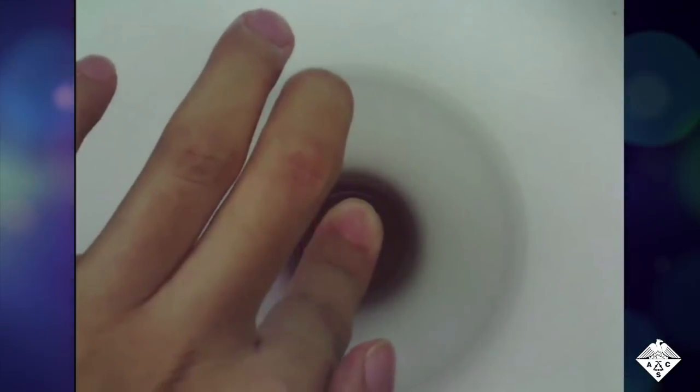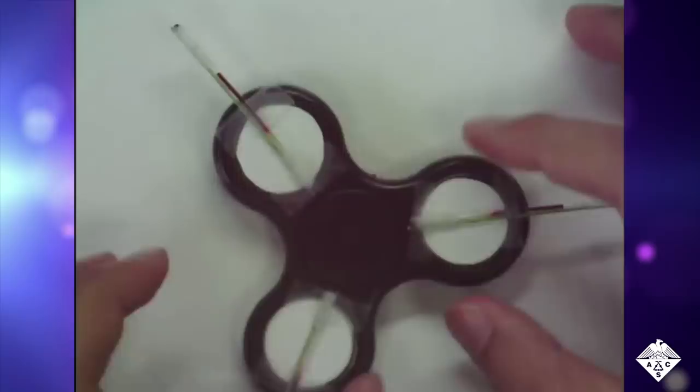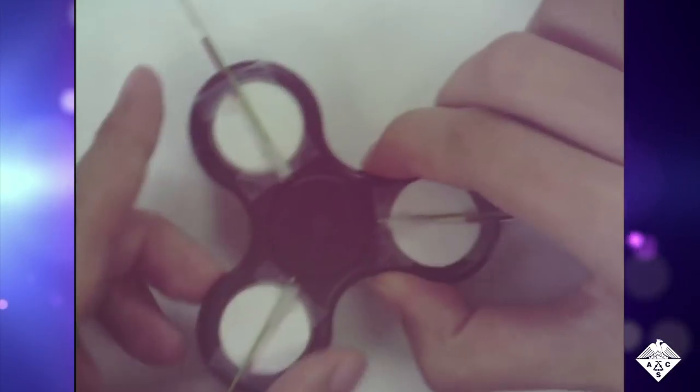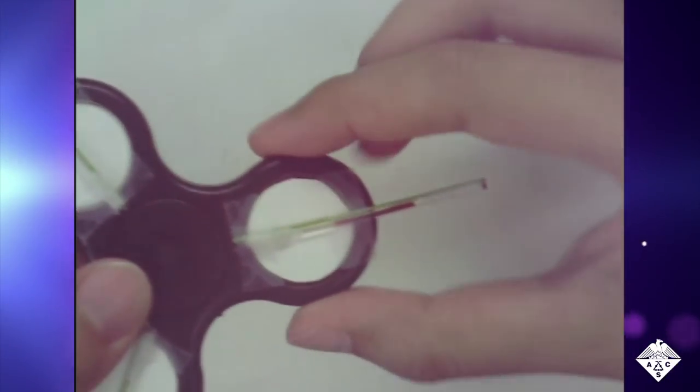They found that by flicking the spinner with a finger three to five times, allowing it to come to a natural stop in between flicks, they could separate about 30% of the plasma with 99% purity. The separation required only four to seven minutes.